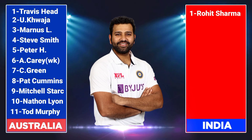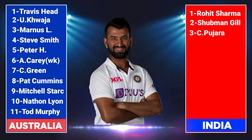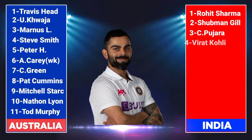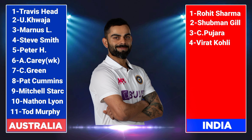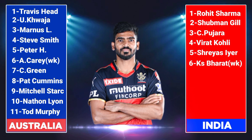Team India final playing 11 vs Australia: 1. Rohit Sharma, captain and right-hand batsman. 2. Shubman Gill, right-hand batsman. 3. Cheteshwar Pujara, right-hand batsman. 4. Virat Kohli, right-hand batsman. 5. Shreyas Iyer, right-hand batsman. 6. K.S. Bharat, wicketkeeper and right-hand batsman.